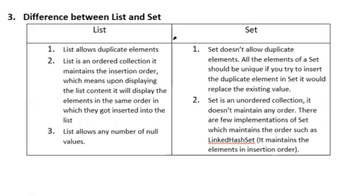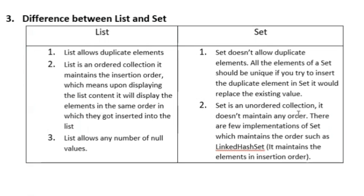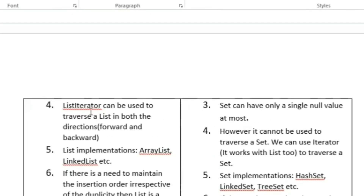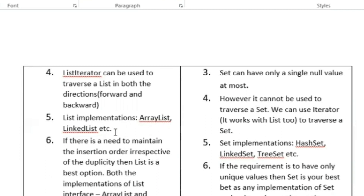The next question is the difference between List and Set. List allows duplicate elements whereas Set does not allow duplicate elements. List is an ordered collection — it maintains insertion order, meaning elements are displayed in the same order they were inserted. Set is an unordered collection and does not maintain any order, although a few implementations like LinkedHashSet do maintain order. List iterator can traverse in both forward and backward directions, whereas for Set we can only use iterator. List implementations are ArrayList and LinkedList, whereas Set implementations are HashSet, LinkedHashSet, TreeSet, etc.